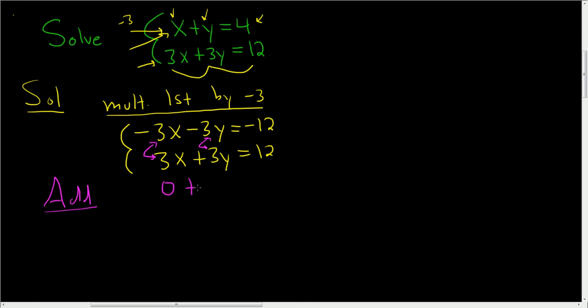And if you add these you get zero. So zero equals zero. So we have infinitely many solutions. Whenever you get zero equals zero, you end up with infinitely many solutions.